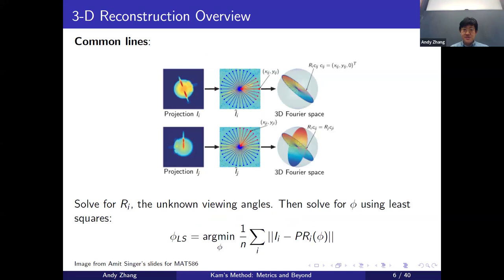There are several existing methods for 3D reconstruction. The first is common lines. The key idea is that if we can figure out relative rotations, this becomes a tomographic reconstruction problem. If we consider each projection image's Fourier transform, it represents a plane in 3D Fourier space passing through the origin. Two such planes intersect in a line — the common line. By knowing the common lines, we can solve for relative rotations and then obtain the unknown viewing angles, reducing the problem to a least squares tomographic reconstruction for the electrostatic potential phi.